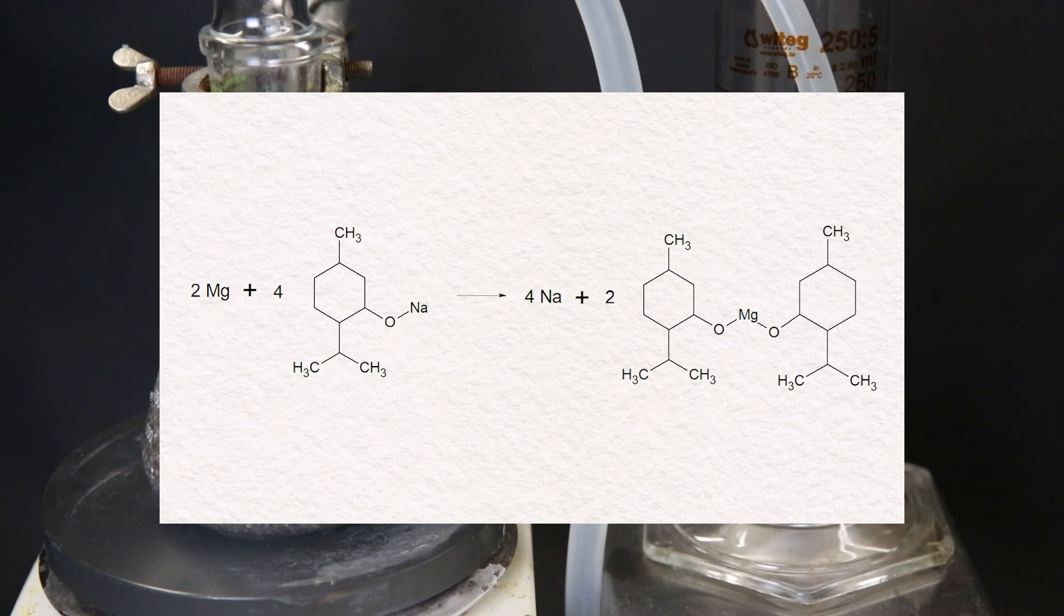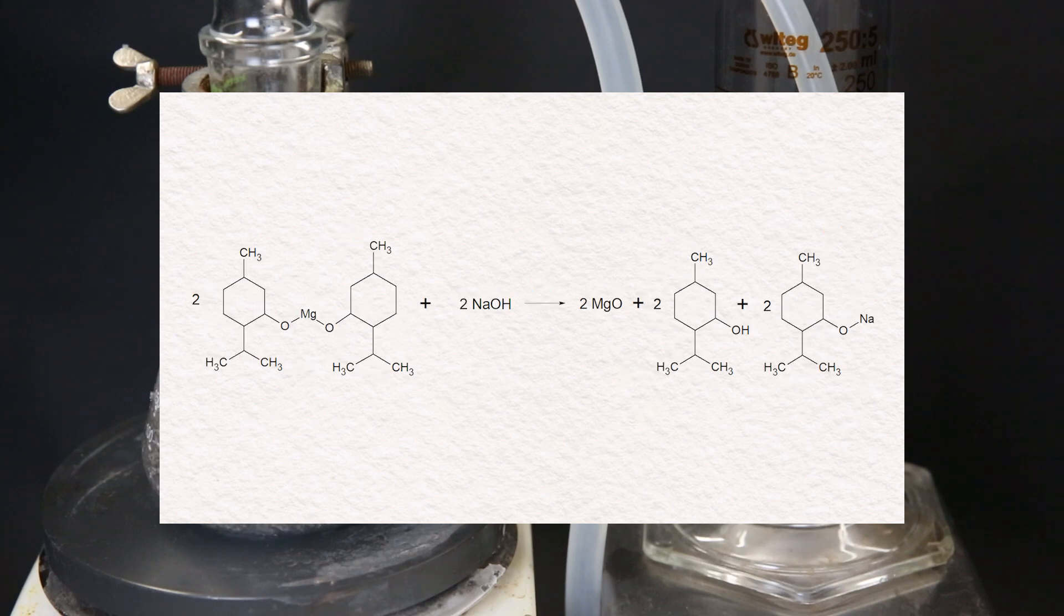When all the water is removed from the reaction mixture we start producing the sodium. The sodium alkoxide of the menthol can react with magnesium metal to form sodium metal and a magnesium complex of two menthols. And then as the final step the magnesium complex can react with the sodium hydroxide to form magnesium oxide and reforming the catalyst.